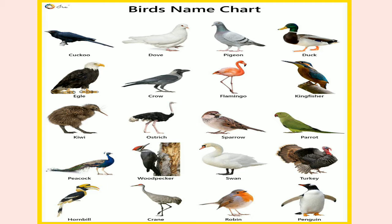Down feathers are small and fluffy. Body feathers are bigger than down feathers. Flight feathers are on the wings and help the birds fly. Tail feathers are long and help the birds slow down.